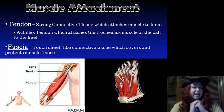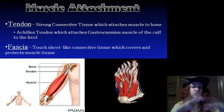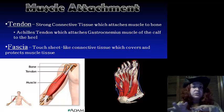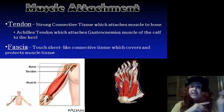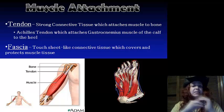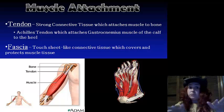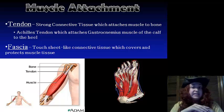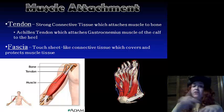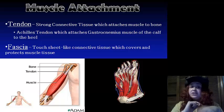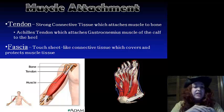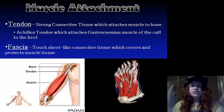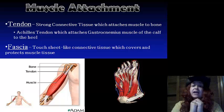Now muscle attachment. Tendons are strong connective tissues that connect muscle to bone. Our Achilles tendon attaches the gastrocnemius muscle of our calf to our heel. The fascia is a tough sheet-like connective tissue that covers and protects our tissues.